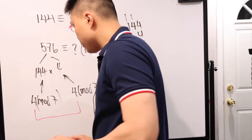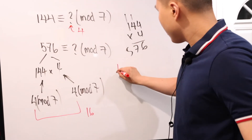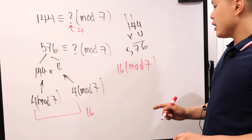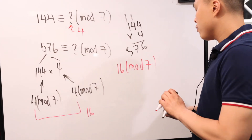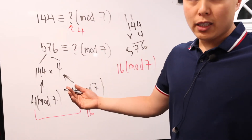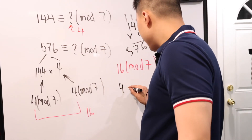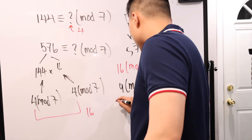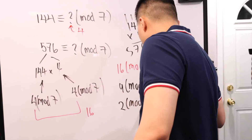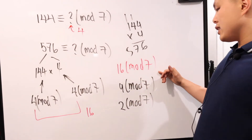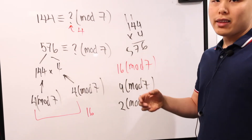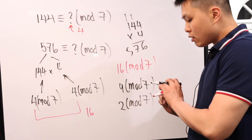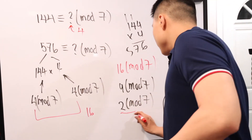Multiplying the remainders: 4 times 4 is 16 mod 7. Now simplify — 7 goes into 16 twice, leaving 2. So 576 is equivalent to 2 mod 7. Be careful: you might think seven goes in once leaving 9, but 7 goes into 9 again. Keep subtracting until the remainder is less than the modulus. The final answer is 2 mod 7.